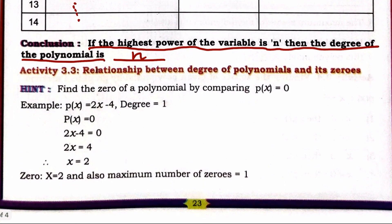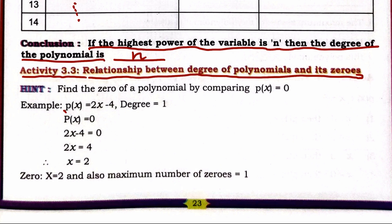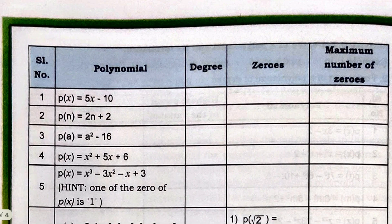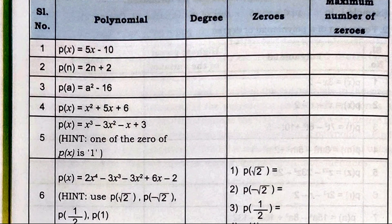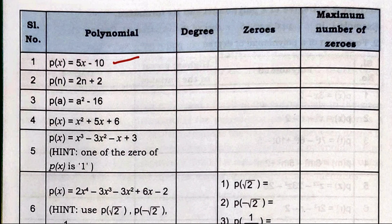Activity 3.3: Relationship between degree of polynomials and its zeros. If the degree of a polynomial is 1 (linear), it has at most one zero. For example, p(x) = 5x − 10 has degree 1, so the maximum number of zeros is one only.